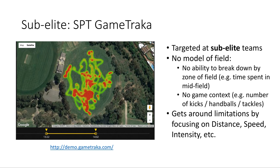Starting off with the sub-elite space, we have SPT Game Tracker, which was written by the company Sports Performance Tracking. I had a play around with the demo that you can see on the left there, where their most advanced spatial analytics tool is essentially just a heat map overlaid on Google Maps. The problem with this tool is that they don't have any internal model of what the field looks like, which means there's no capability to break the stats down by things such as which zone the players are in.